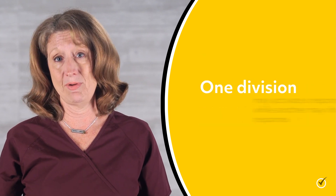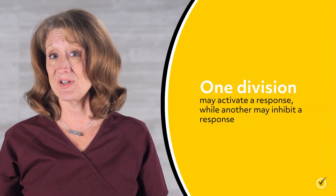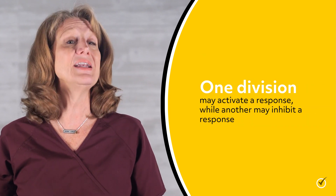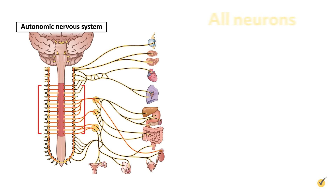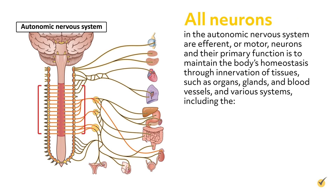One division, for example, may activate a response, while another may inhibit a response. All neurons in the autonomic nervous system are efferent, or motor neurons, and their primary function is to maintain the body's homeostasis through innervation of tissues, such as organs, glands, and blood vessels,